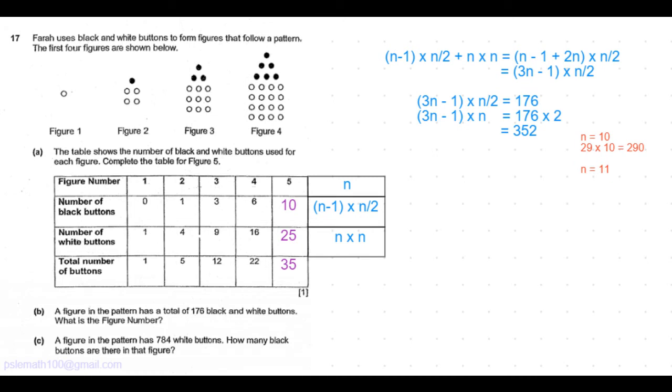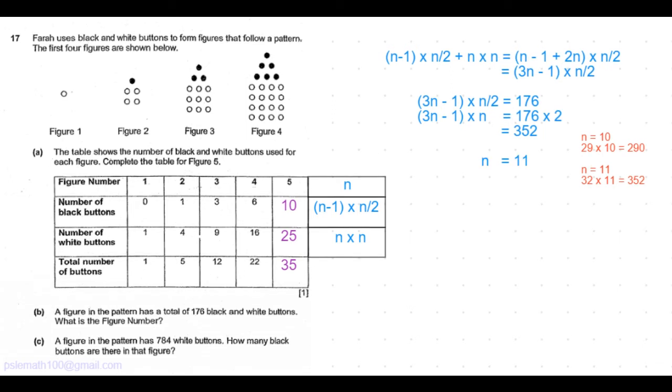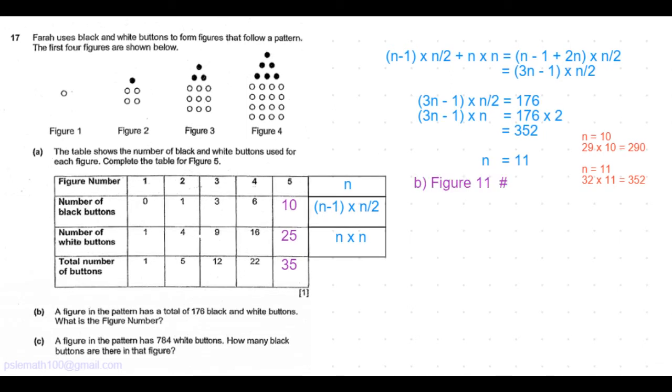So 3 times 11 is 33, minus 1 is 32, times 11 is 352. Yes. So we got the value of n to be equal to 11. So figure 11 would have 176 black and white dots.